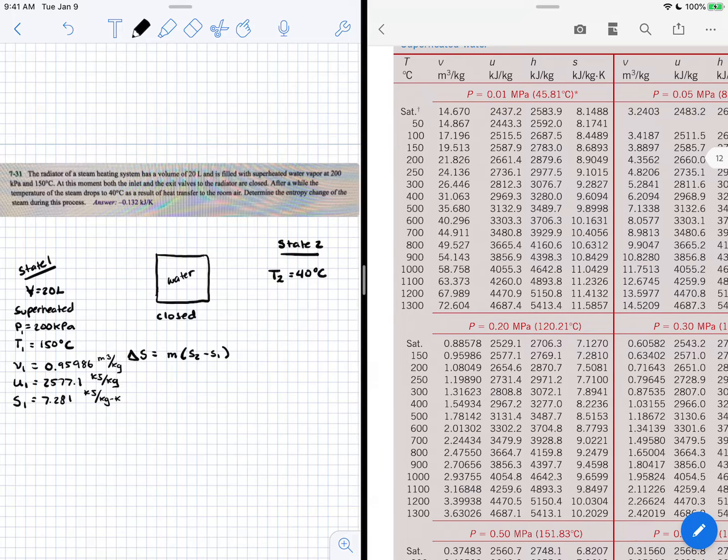We know it's a closed system, so mass is constant. We also know it's a radiator, and as in most radiators, it doesn't have a changing volume. With that information, we can say the specific volume at 1 equals the specific volume at 2.